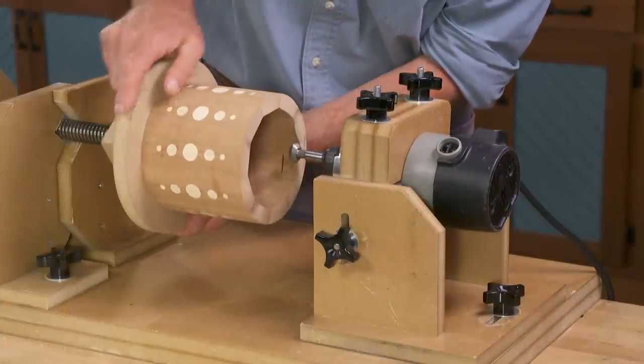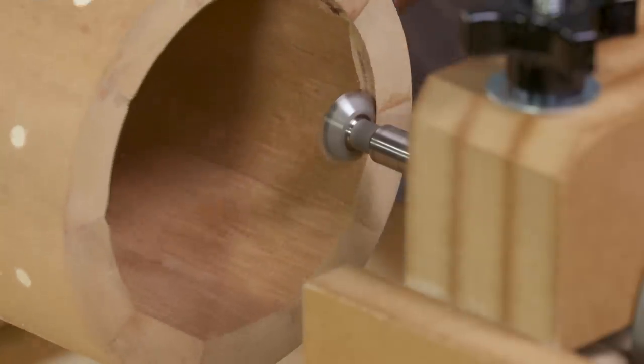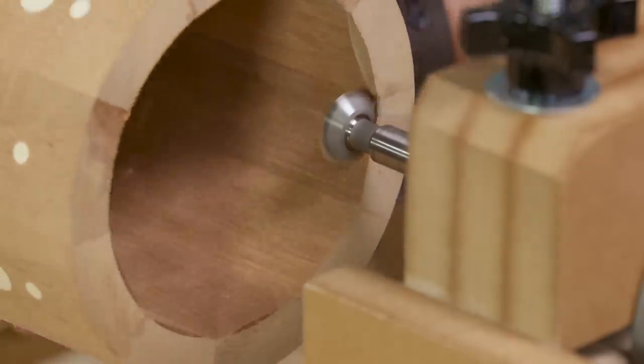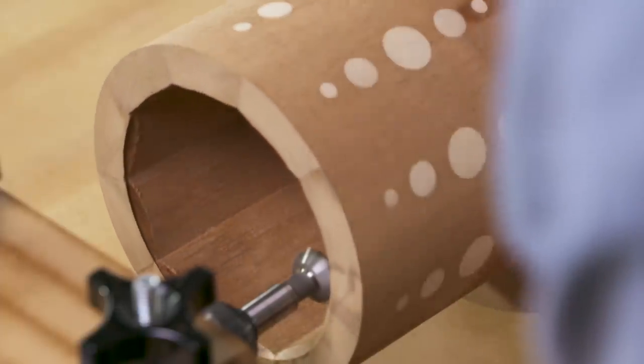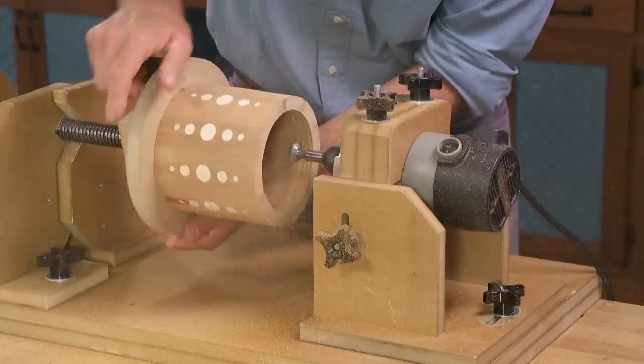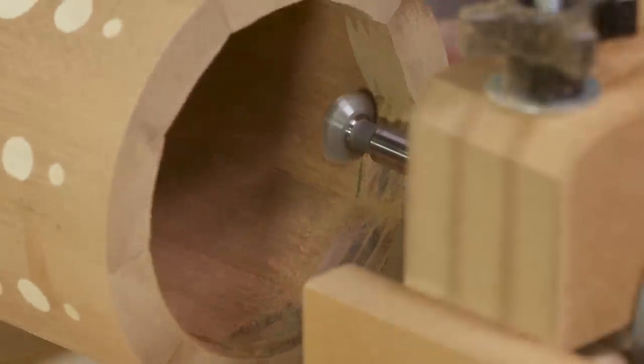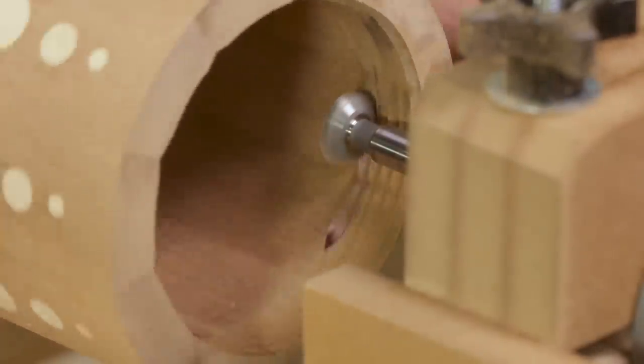With the router turned on, I'm now going to advance the canister into the bit. Slowly and steadily, advancing and advancing until I reach that 3 quarters of an inch line on the interior. When I've reached that line, I'm going to reverse direction and back the canister out.